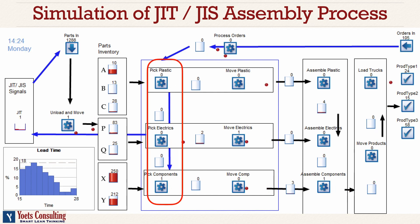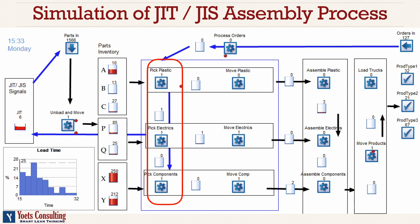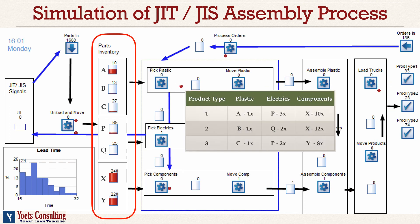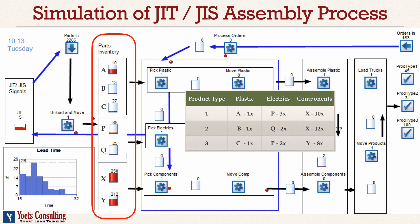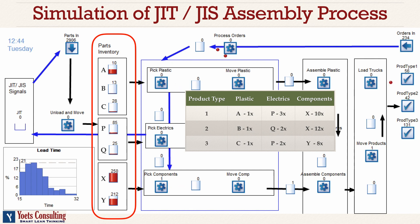This information comes to these three activities: pick plastic, pick electrics, and pick components. They pick up the parts from the parts inventory according to the type, according to the spreadsheet shown here at the table. There are three types of plastic, two types of electric, and two types of components. Based on the product type, those pick activities will pick up the right sort of parts.